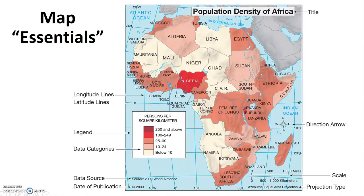We have discussed map projection and map scale. Now we'll briefly discuss some other important components of maps. Your book notes eight map essentials. Not every map will have all eight of these essentials, but in general these eight components will make a map more effective and clear. See figure 2-11 shown here as an example of a map that shows all eight map essentials.